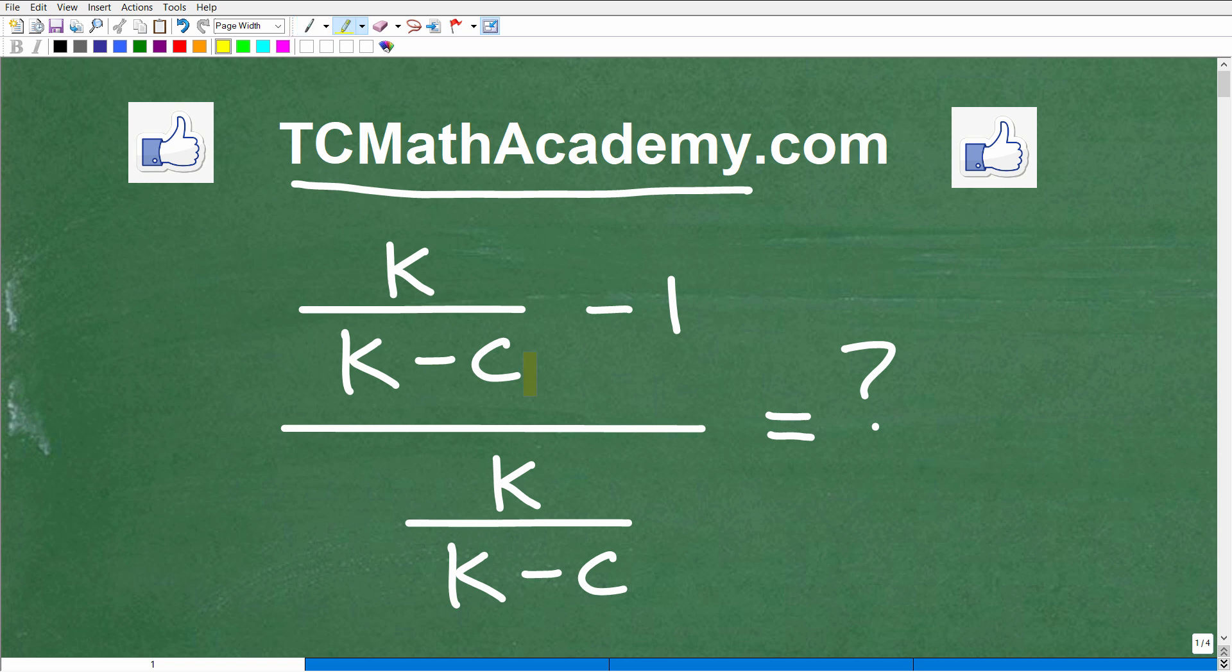So that is quite a description, but anytime you are dealing with fractions within fractions, we call those complex fractions. You can see here we have a fraction here and a fraction here. But technically, when you have variables in a fraction in algebra, we describe these as rational expressions. So that's why this thing here is a complex rational expression.